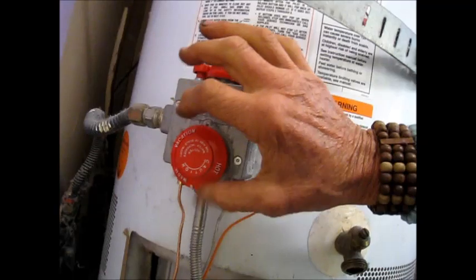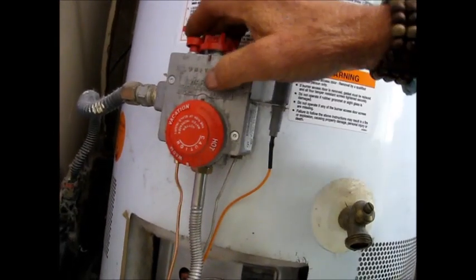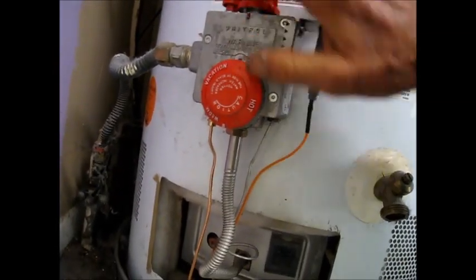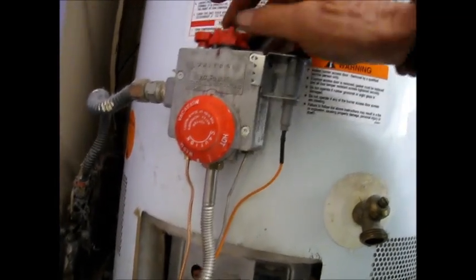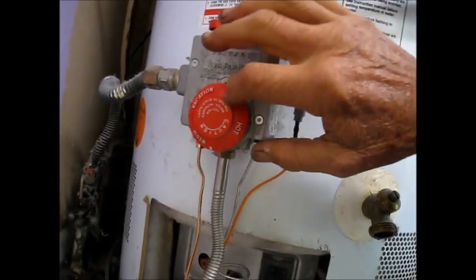Remember when you are lighting this, you always want to turn this off. This valve has to be turned off in order for the flame to come up. The pilot light may light with this valve on, but it won't. The main jet valve will not turn on unless this is turned off.